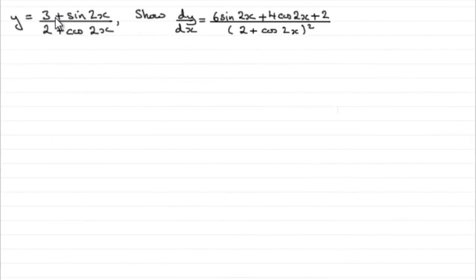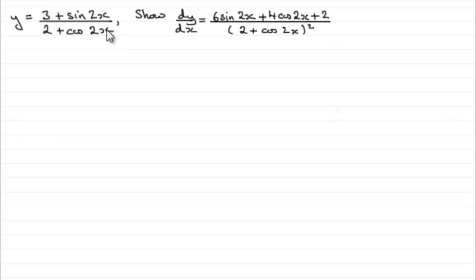We're given that y equals (3 plus sine 2x) over (2 plus cos 2x), and we've got to show that dy/dx equals a given fraction. What we've got here is y equals a fraction where both the top and the bottom contain x's — they're both functions of x — so we've got to use the quotient rule.